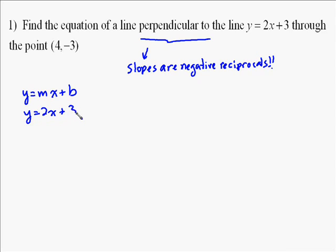So the first thing we do is we have to figure out what the slope of our first equation is. Using y equals mx plus b, the slope is 2. So the slope of the line we're trying to draw a perpendicular line to is 2.